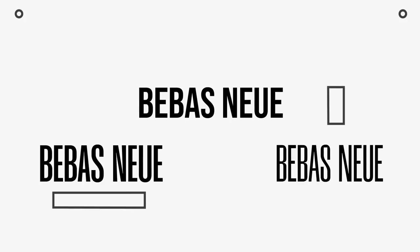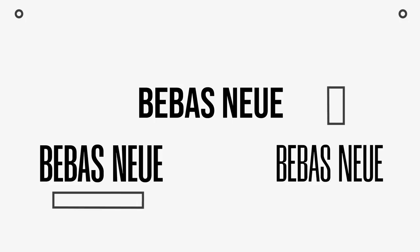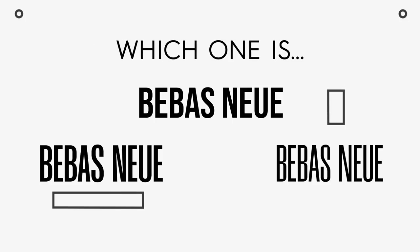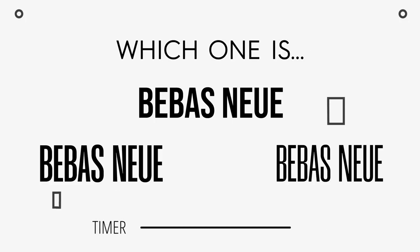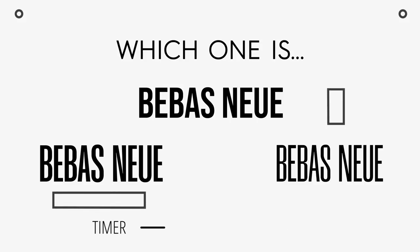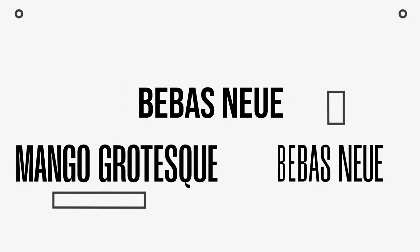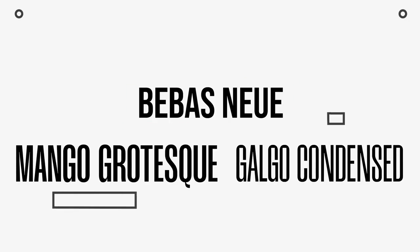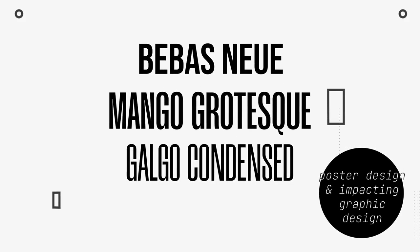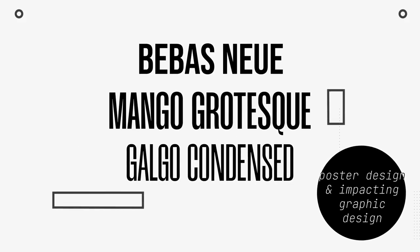We're going to step things up a bit — we now have three different fonts on screen. One of these is the highly acclaimed and notorious typeface Bebas Neue; the other two are from different font families. The font in the middle is in fact Bebas Neue. On the left we have Mango Grotesque, and on the right is Galgo Condensed. All three would be really great for poster designs and impactful graphic design works.